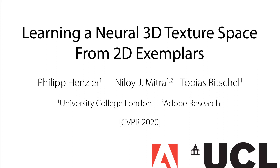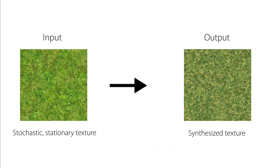We present Learning a Neural 3D Texture Space from 2D Exemplars. Our method creates synthesized textures from a 2D texture input by matching their statistics.